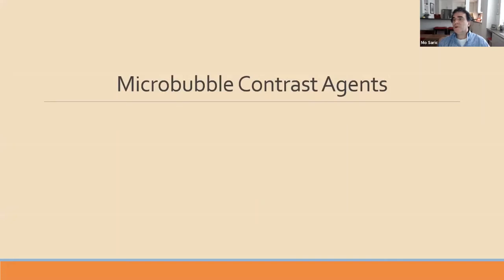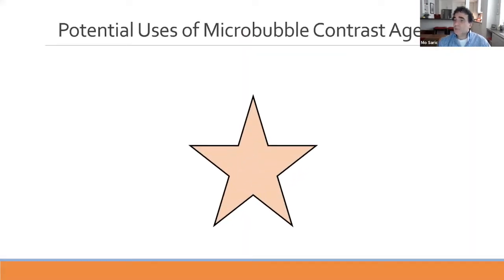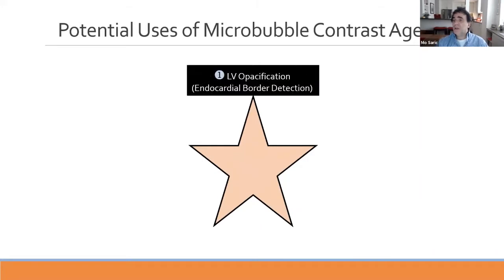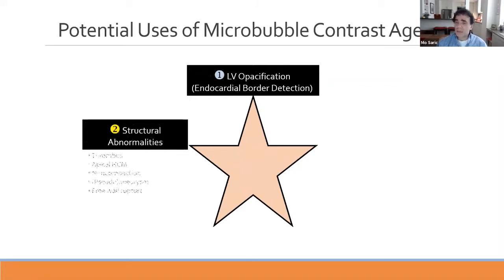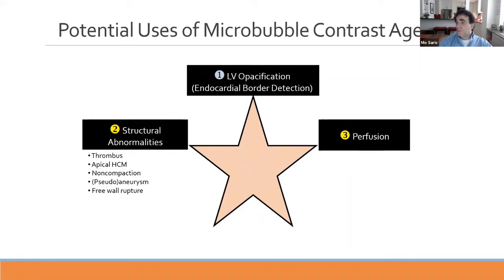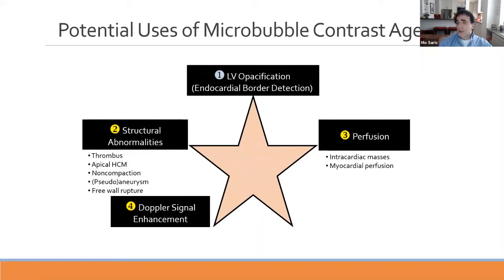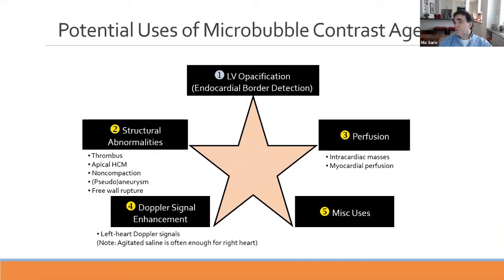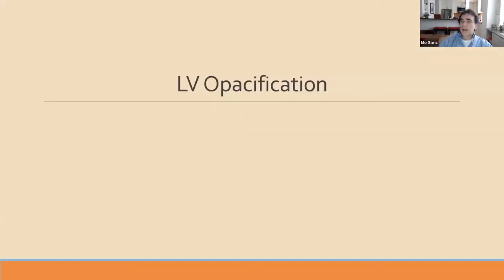How about microbubble contrast agents? There are five potential uses: left ventricular opacification or endocardial border delineation is the only on-label indication. Off-label uses include structural abnormalities such as thrombus, apical hypertrophic cardiomyopathy, non-compaction, pseudo-aneurysm, or free wall rupture; myocardial perfusion; endocardiac masses; Doppler signal enhancement on the left side; and miscellaneous uses such as aortic dissection or artifact evaluation.